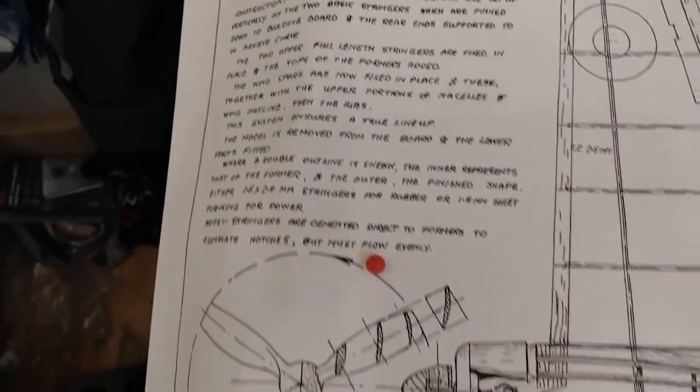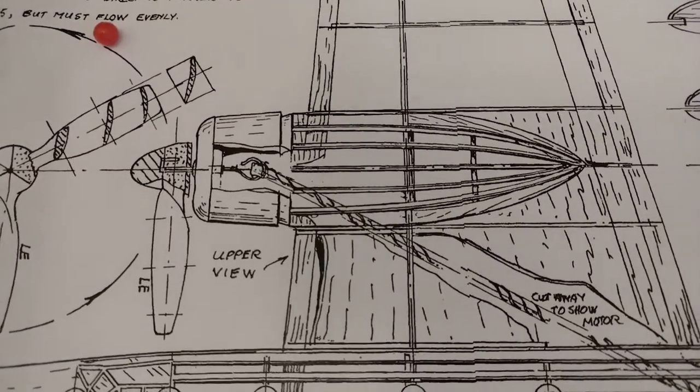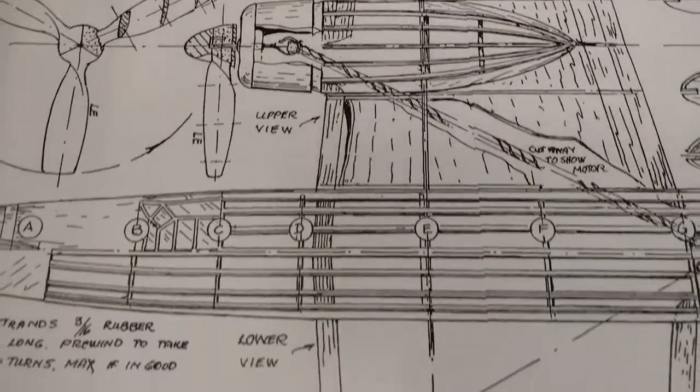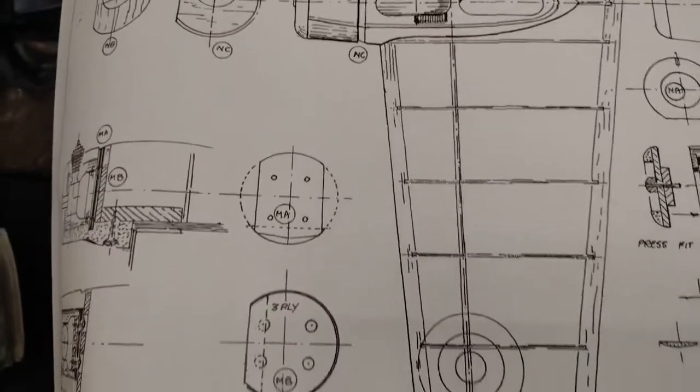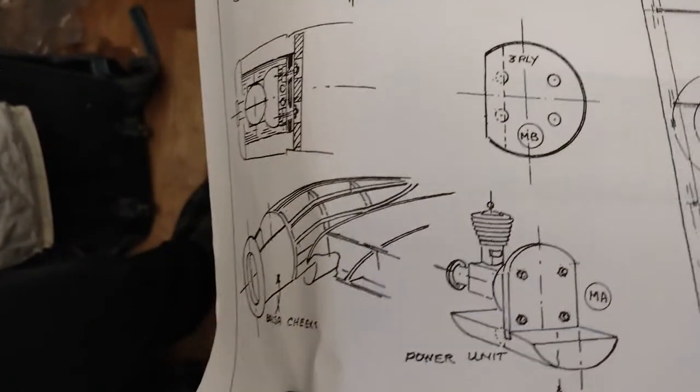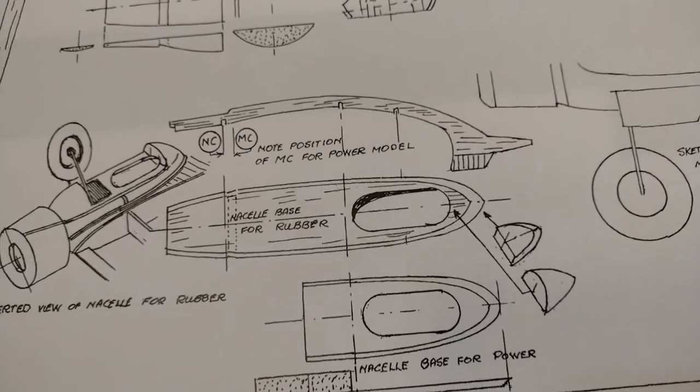There are some instructions here I'm going to have to read in more detail. The engine nacelles, like with the mosquito, each nacelle is almost like a fuselage of its own. Here we have options for the engines, maybe for the petrol engine which I will not do for sure.